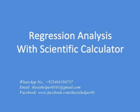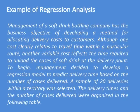Regression analysis with a scientific calculator. A management of a soft drink bottling company has the business objective of developing a method for allocating delivery costs to customers. One cost clearly relates to travel time within a particular route, while another variable cost reflects the time required to unload the cases of soft drink at the delivery point.